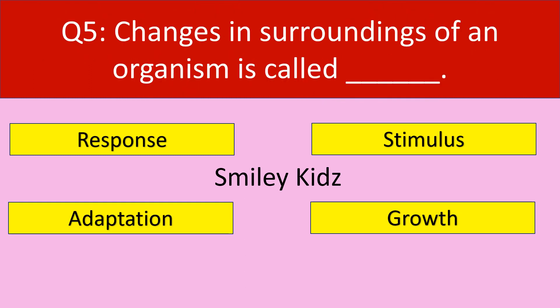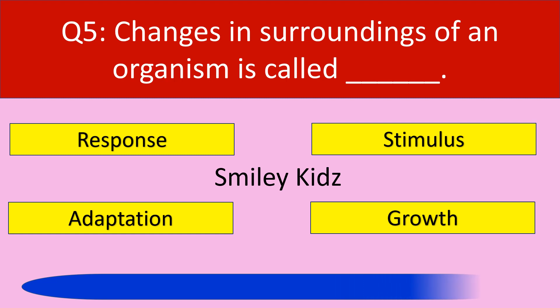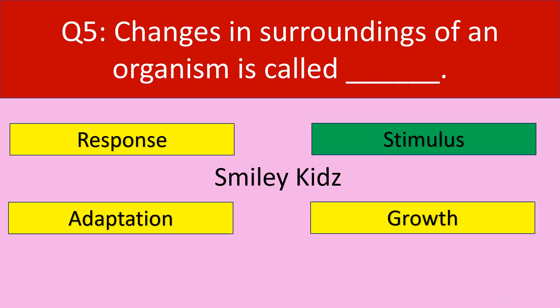Question number 5. Changes in surroundings of an organism is called. Options are: response, stimulus, adaptation, growth. Your time starts now. Your time is up. The correct answer is stimulus. Changes in surroundings of an organism is called stimulus.